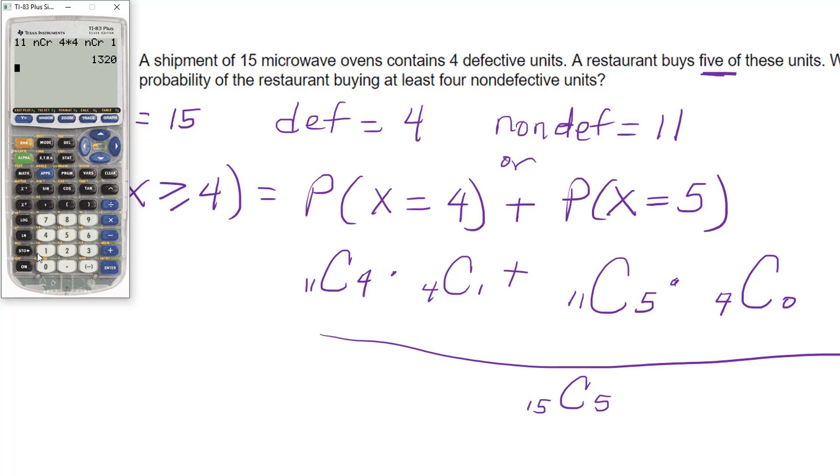Now let's do this second piece. So 11 math, probability, combination, enter five times four math, probability, combination, and then zero. And so that's 462.